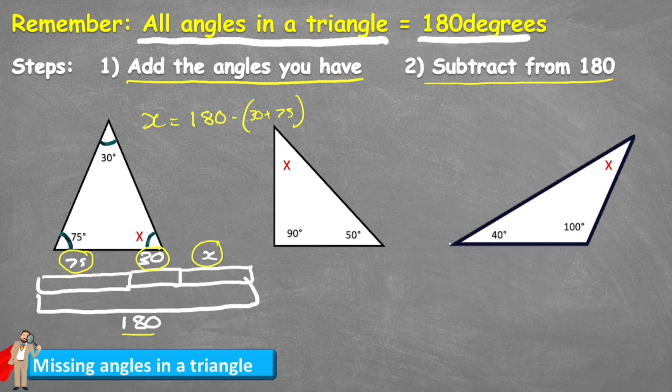So now I can start to solve this and again let's start with our brackets X equals 180 subtract. Well what's 30 plus 75? That's 105. So therefore X equals 180 subtract 105 which is 75.